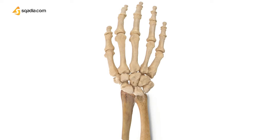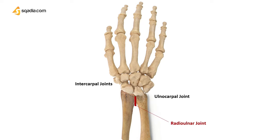The ulnocarpal joint is located on the little finger side of the wrist, where the ulna connects to two wrist bones: lunate and triquetrum. The distal radio-ulnar joint connects the ends of both the radius and ulna, excluding all wrist bones. The intercarpal joints are the joints present between the individual carpal bones in the same row, giving us a proximal intercarpal joint and a distal intercarpal joint.